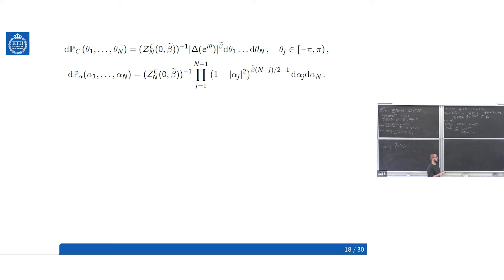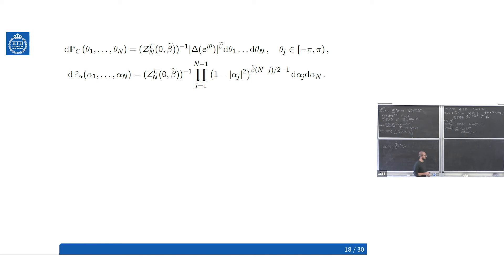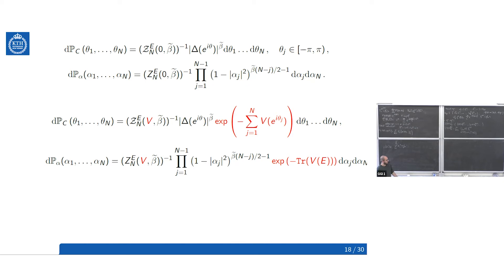These random matrix ensembles at high temperature were studied deeply by many people. The key result I use here is due to Hardy and Lambert: for β > 0 and any continuous function V from the torus to ℝ, the empirical measure satisfies a large deviation principle, which implies weak convergence to a probability distribution μ_{β,V}, the unique minimizer of a certain functional. This is similar to the variational characterization Carol introduced earlier.